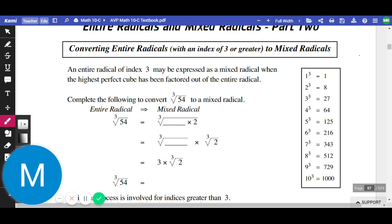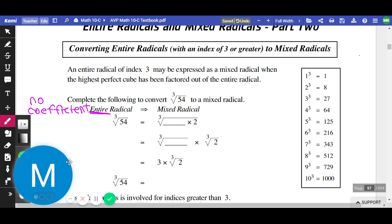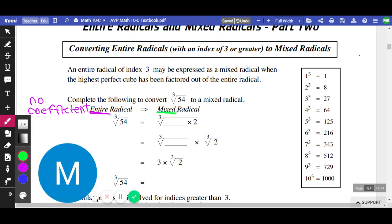Let's look at index 3. We're going to simplify this radical. To simplify a radical means to take something from an entire radical to a mixed radical. Entire radical means that there's no coefficient, no number in front of the radical multiplying by the radical. A mixed radical has a coefficient. Just a reminder on our definitions. When you're converting from entire to mixed, we call it simplifying.